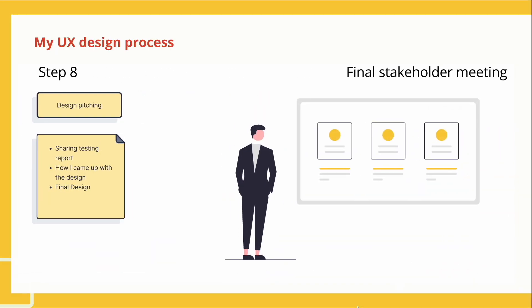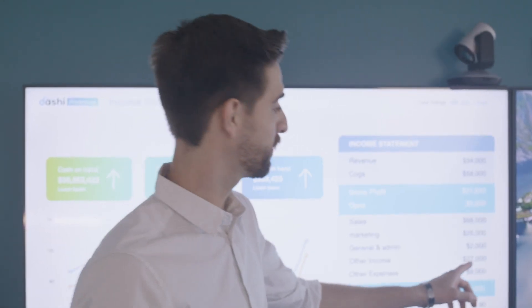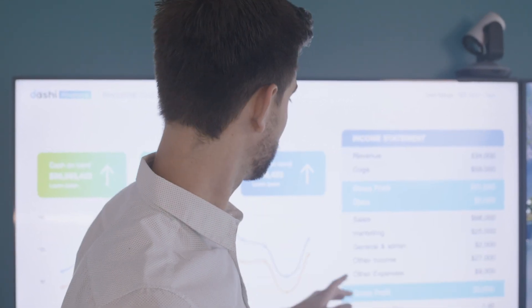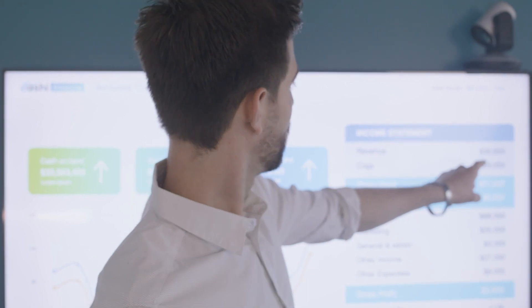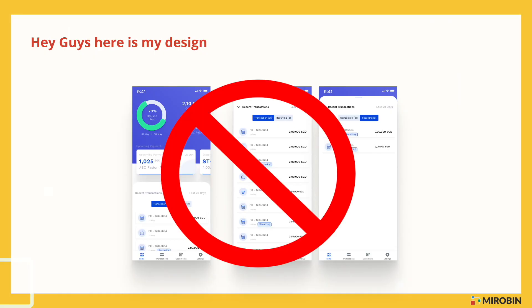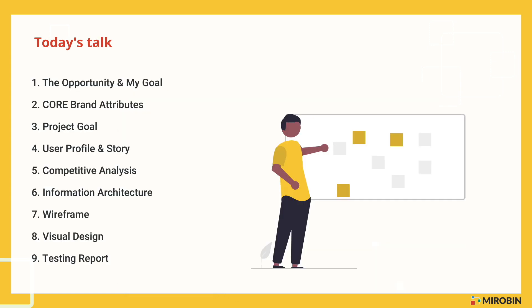Once the flow is ready, I present it to the stakeholder, design lead, and project manager. In this meeting, I mostly tell the story behind the design, share the user testing report, and get the final approval. Quick tip: do not share the design before giving the design pitch. Instead, tell the story behind creating this layout. Telling a story provides a strong foundation for your design and proves that there is logic behind your design solution — not out of the blue.